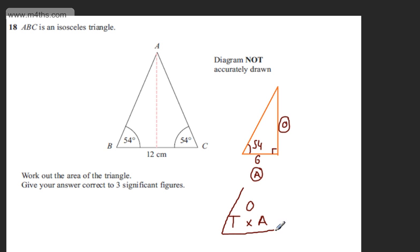We're looking for the opposite. Therefore what we do now is the adjacent multiplied by the tan of the angle or the tan of the angle multiplied by the adjacent. It doesn't matter which way around you do it. So this is going to be 6 tan of 54 degrees equals the opposite.